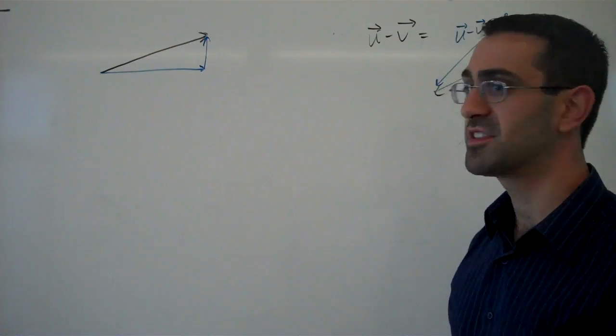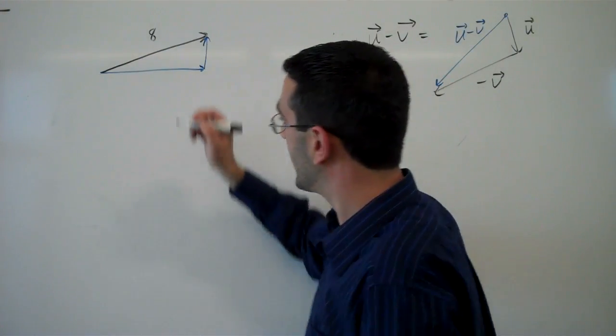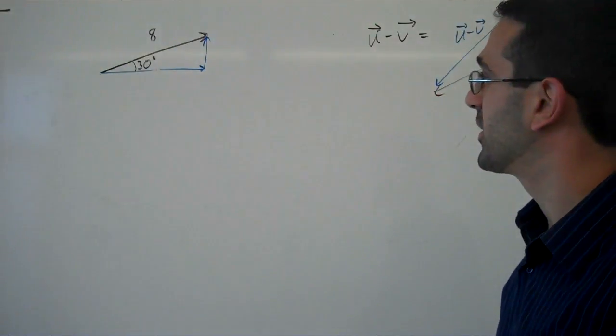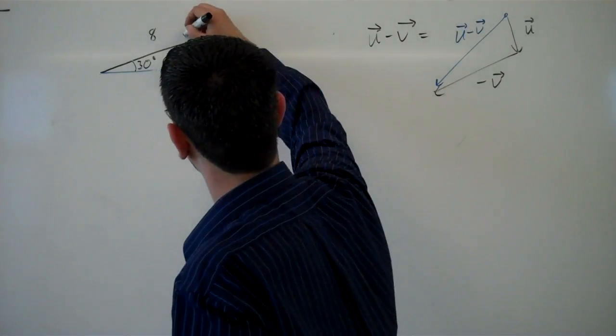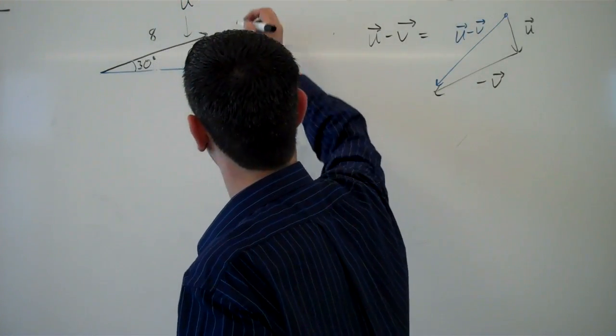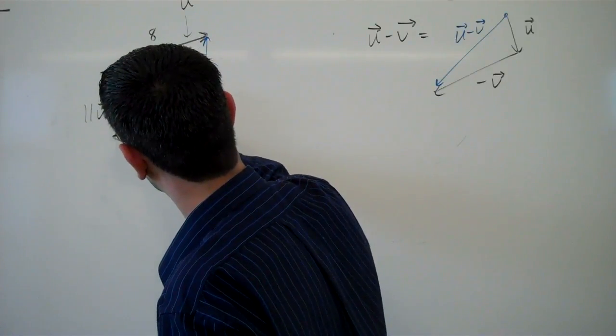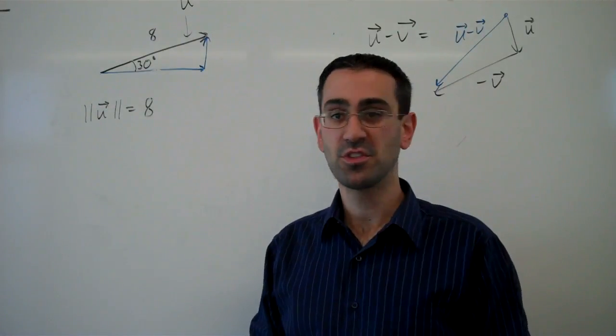We represent the vector as a combination of a horizontal piece and a vertical piece, the components of the vector. For example, let's say this vector had length 8 and an angle of 30 degrees. So that gives us a magnitude and a direction. And so if this is the vector u, I can say that the magnitude of the vector u is 8.